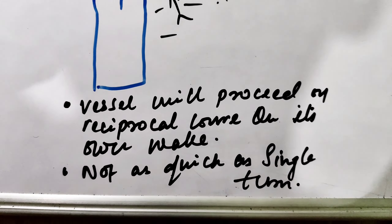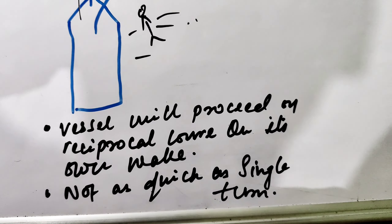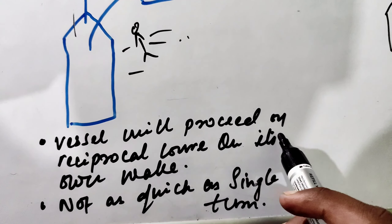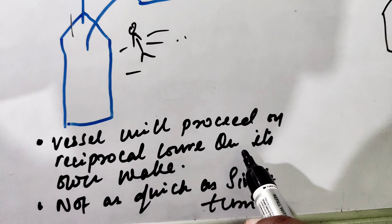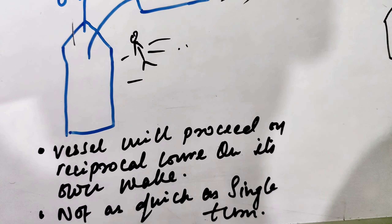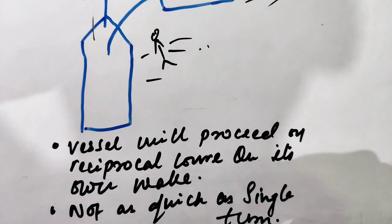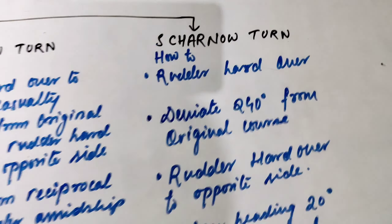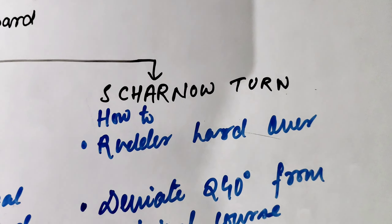The advantage of the Williamson turn is that the vessel will proceed on the reciprocal course along its own wake. However, it is not as quick as the single turn.